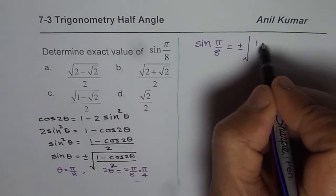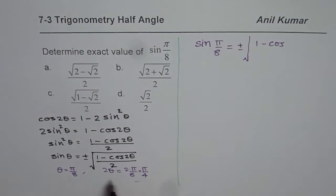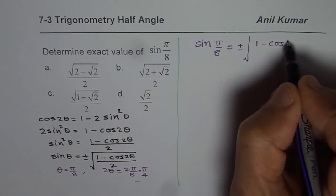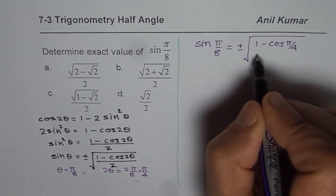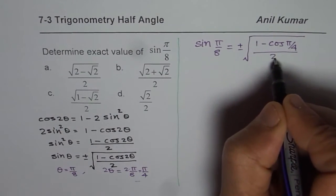1 minus cos 2 theta, 1 minus cos of 2 times theta, in this case will be pi by 4, twice pi by 8. That is the idea.